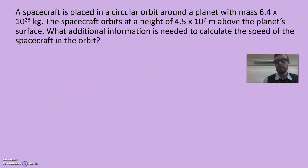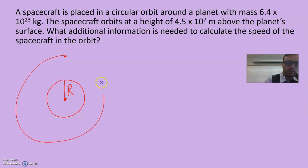A spacecraft in a circular orbit at a certain height above the planet's surface. What additional information is needed to calculate the speed of the spacecraft in orbit? If you are orbiting around a planet, that planet has a certain radius. But if you're out here in space orbiting, you are orbiting at height H above the planet. The thing is, that's not how gravity works.